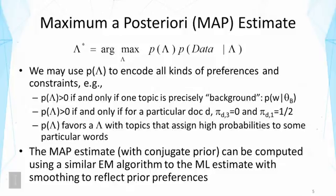The MAP can be computed using a similar EM algorithm as used for maximum likelihood estimation, with just some modification to smooth the parameters to reflect the prior preferences. If we use a special form of prior called a conjugate prior, the functional form of the prior will be similar to the data, so we can combine the two. The consequence is that we can convert inference of the prior into inference of having additional pseudo data, as if we had more data. This is convenient for computation.